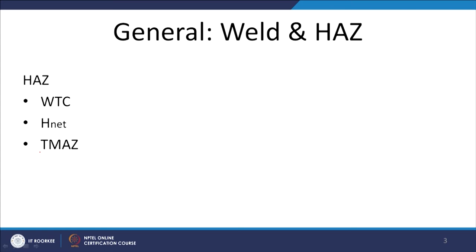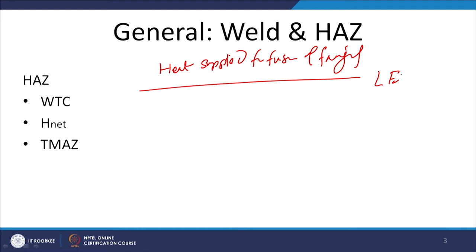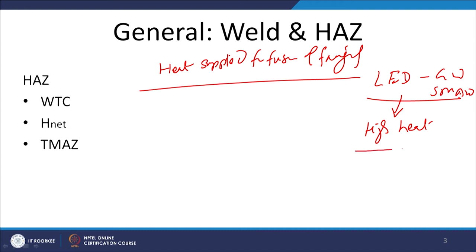The weldability related issues of the base metal can be reduced, but we cannot do much as far as heat affected zone development is concerned because it is directly affected by the amount of heat being supplied for fusion of faying surfaces. Low energy density processes like gas welding or shielded metal arc welding will supply a higher amount of heat, so heat input will be more, and that in turn will lead to a wider heat affected zone.